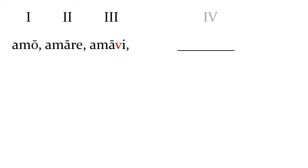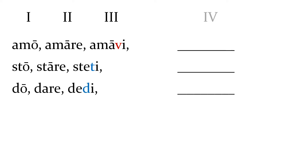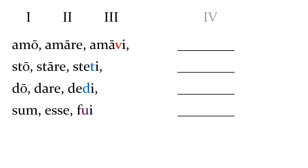It won't always be a V — unfortunately there are a few exceptions. We have the very important verb 'sto,' meaning I stand: 'sto, stare, steti' — so where we would expect a V we get a T. And 'do, dare, dedi' — I give, like 'donum' and 'donation' — again where we would expect a V we got a D, and you'll notice over the second principal part 'dare' there's no macron, which is another peculiarity. And of course the one that's always going to be irregular is 'sum': 'sum, esse, fui' — and that kind of makes sense if you remember that the letter U would often be written as V.